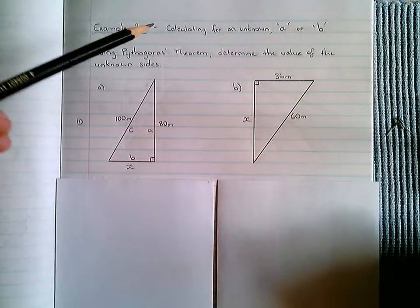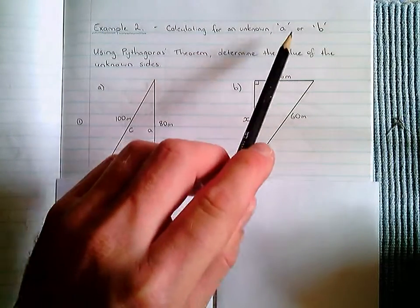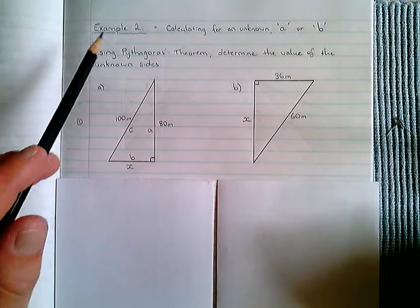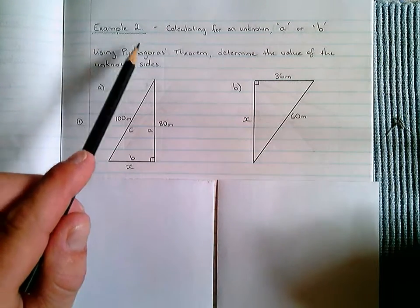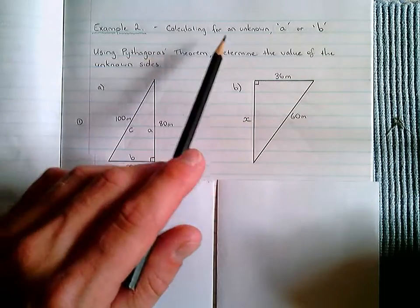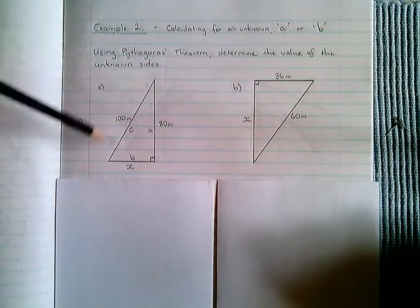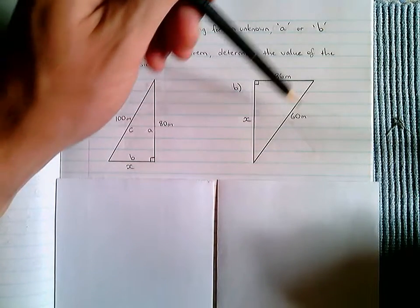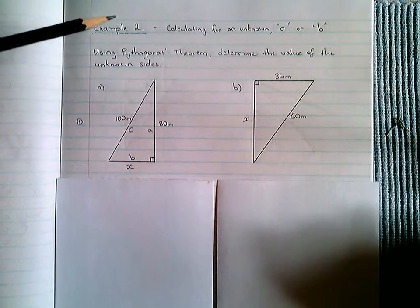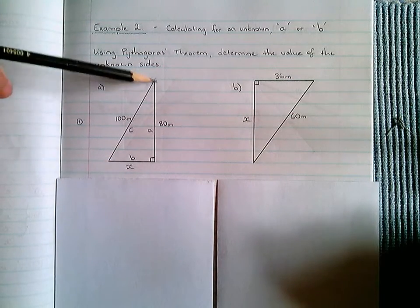In this video we will be using Pythagoras to calculate for an unknown side A or B. This is similar to example 1, where we were calculating for an unknown hypotenuse, being the longer side. But in this particular example, we're going to be calculating for these sides.